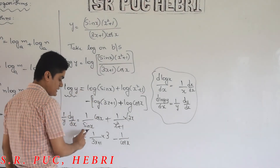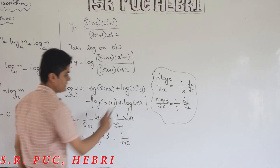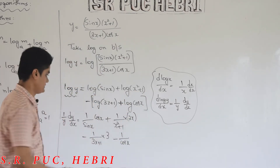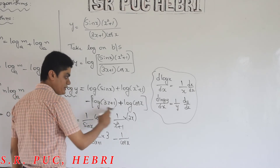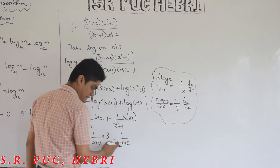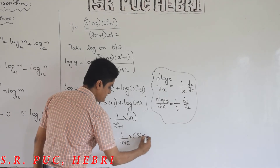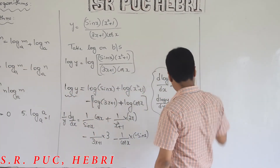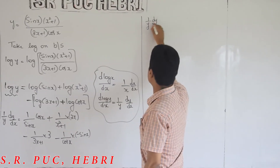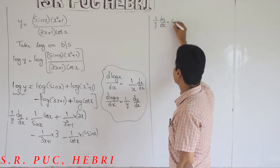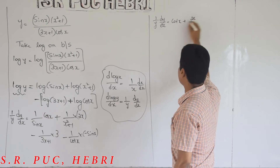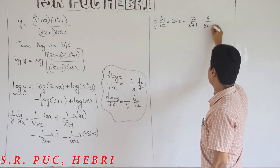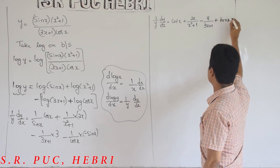Using chain rule, differentiation of log(sin x) gives (1/sin x)·cos x; differentiation of log(x²+1) gives (1/(x²+1))·2x; differentiation of log(3x+1) gives (1/(3x+1))·3; and differentiation of log(cos x) gives (1/cos x)·(−sin x). Simplifying: (1/y)·(dy/dx) = cot x + 2x/(x²+1) − 3/(3x+1) − (−sin x/cos x).